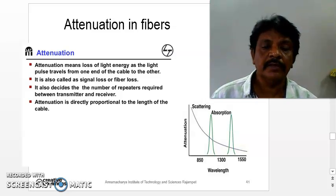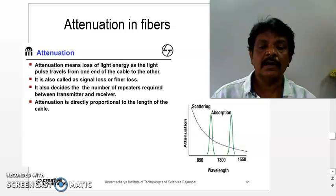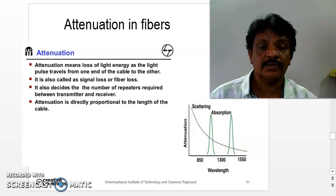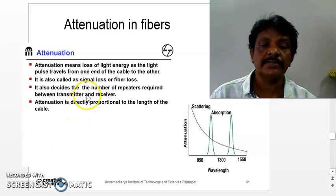Let us continue after knowing the types of optical fiber. Optical fiber signal loss, that is called attenuation in optical fiber.